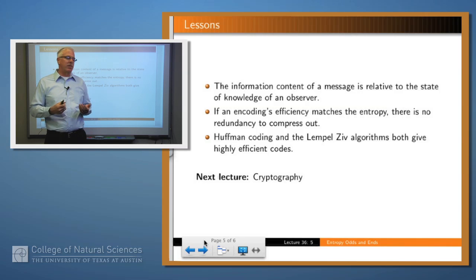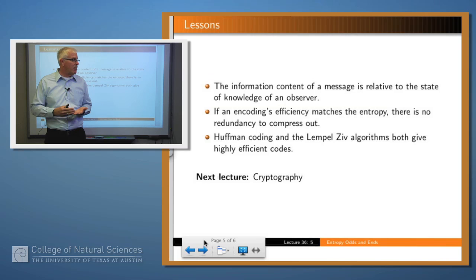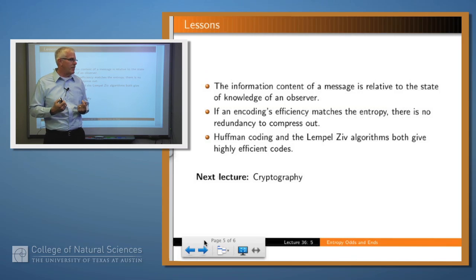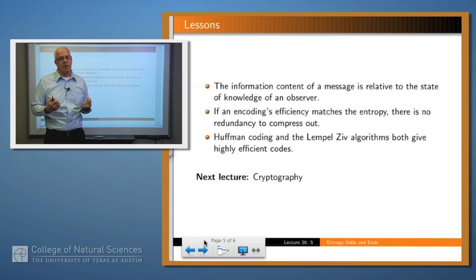So what have we said? Three things. First, the information content of a message is relative to the state of knowledge of the receiver — you always have to keep that in mind. Second, if an encoding's efficiency matches the entropy, then you can't do any better and you can't do any compression — and that is the definition of what it means for a string to be random. And finally, there are some methods by which you can find a good encoding; in particular, Huffman coding and Lempel-Ziv will give you very efficient encodings. Thank you.